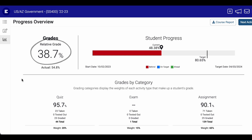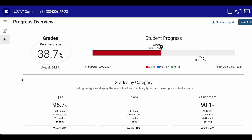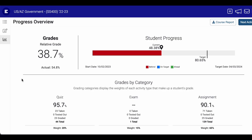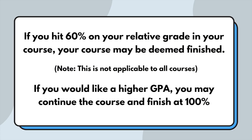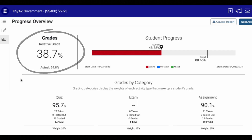Next, let's talk about the relative grade. You might notice that this grade is less than your actual grade. This is because it shows you what your grade would be if you totally stopped your course today, did not finish the rest of the work, and received a zero on all of the unfinished activities. Your relative grade may be used as a way to complete your course — if you hit 60% on your relative grade, your course may be deemed finished. If you'd like a higher GPA, you can continue in the course and finish at 100%. Both your relative grade and your actual grade are equally important, so ensure you're paying attention to both.